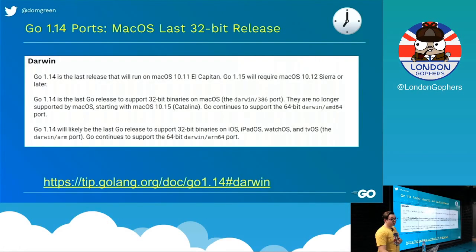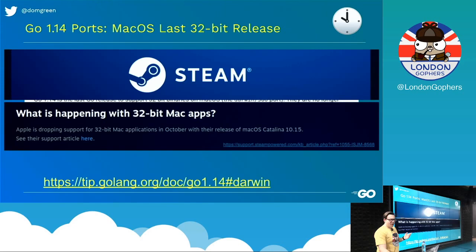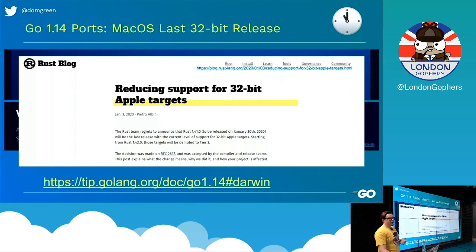One of the things with Go 1.14 is it's the last release to support macOS with 32-bit. If everyone's updated to Catalina, you'll find things like this — all your apps stop working because it's not 32-bit anymore. Other languages are doing the same, so we're not alone. So yeah, last release to support 32-bit Darwin.